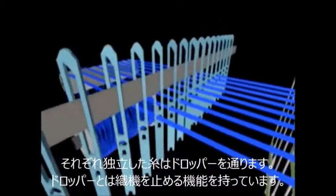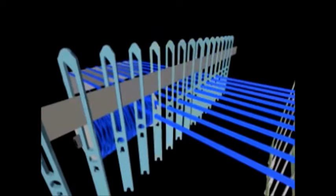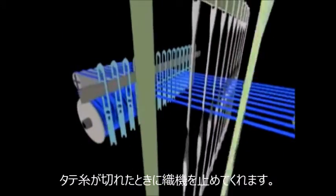Each individual yarn then goes through a drop wire that is part of the loom's stop motion system that helps prevent mechanical defects from occurring during weaving.